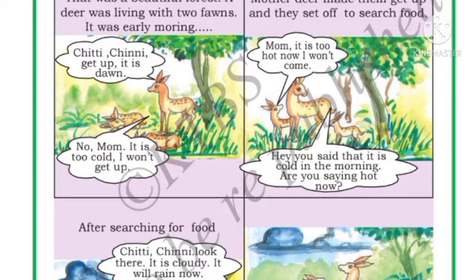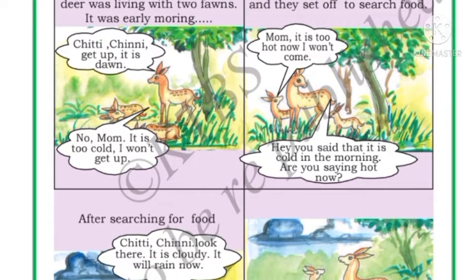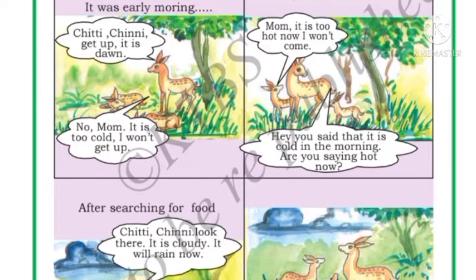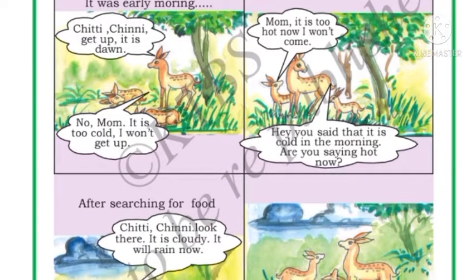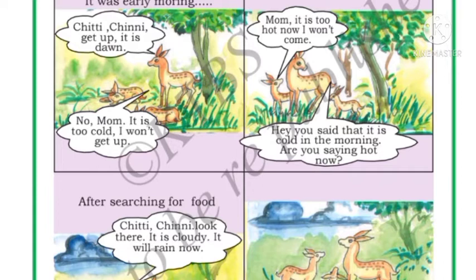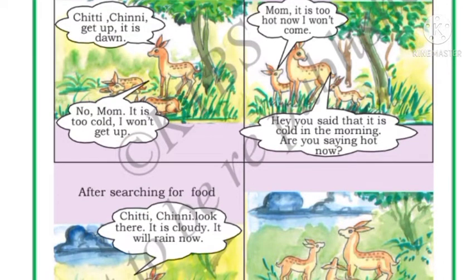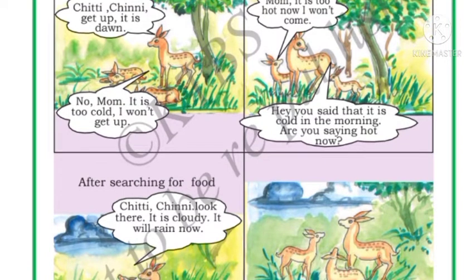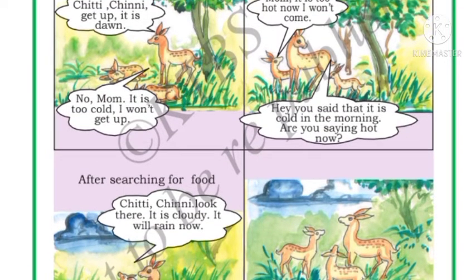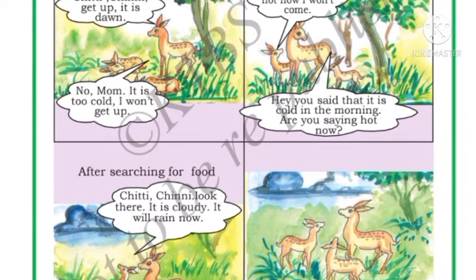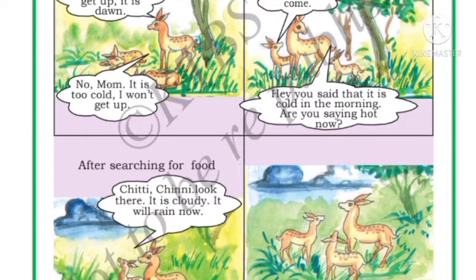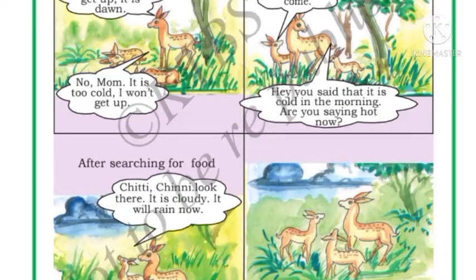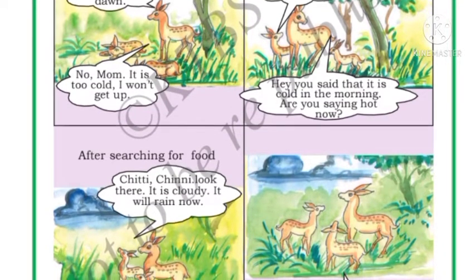We will read this picture story. There was a beautiful forest where a deer was living with two fawns — fawns means the baby of the deer. It was early morning and the deer was telling the two babies, 'Chitti, Chinni, get up! It is dawn.' But the babies replied, 'No mom, it is very cold, we will not get up.'